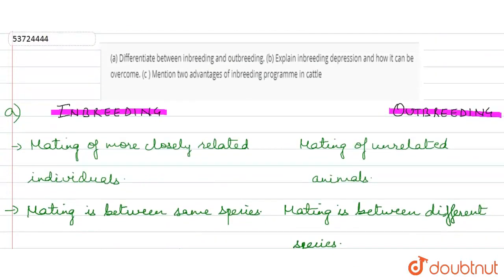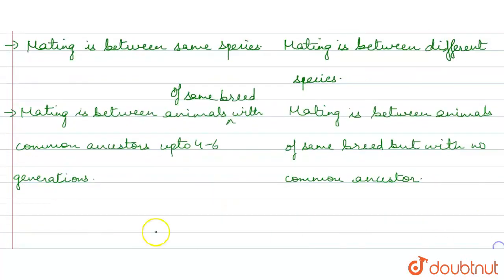This is our first part. Difference between inbreeding and outbreeding. Now, B part. Explain inbreeding depression and how it can be overcome. Hum hai batana hai ki inbreeding depression se kya matlab hai? Aur isse hum kaise overcome kar sakti hai? Now, inbreeding depression kya hota hai?